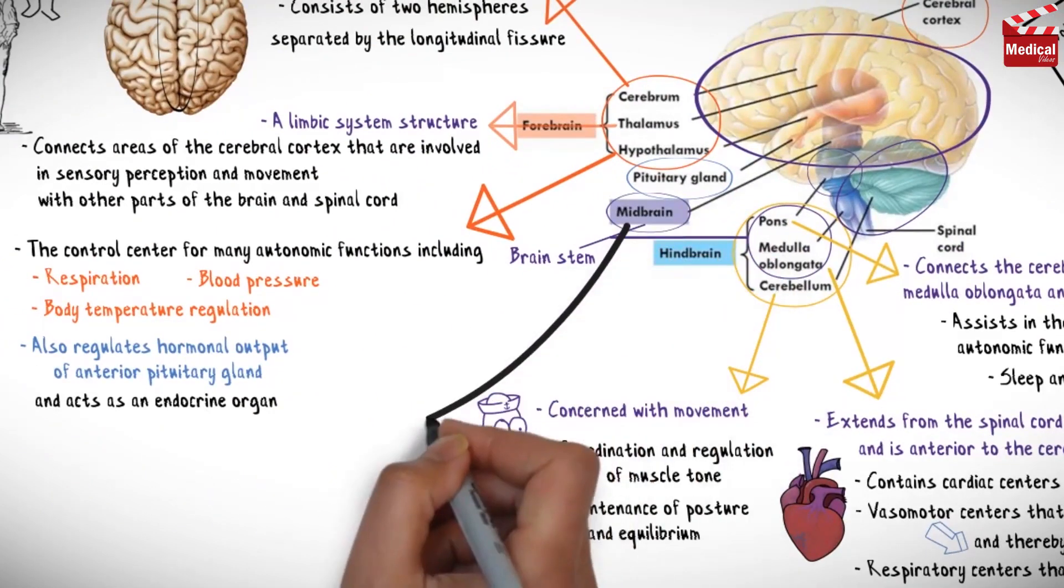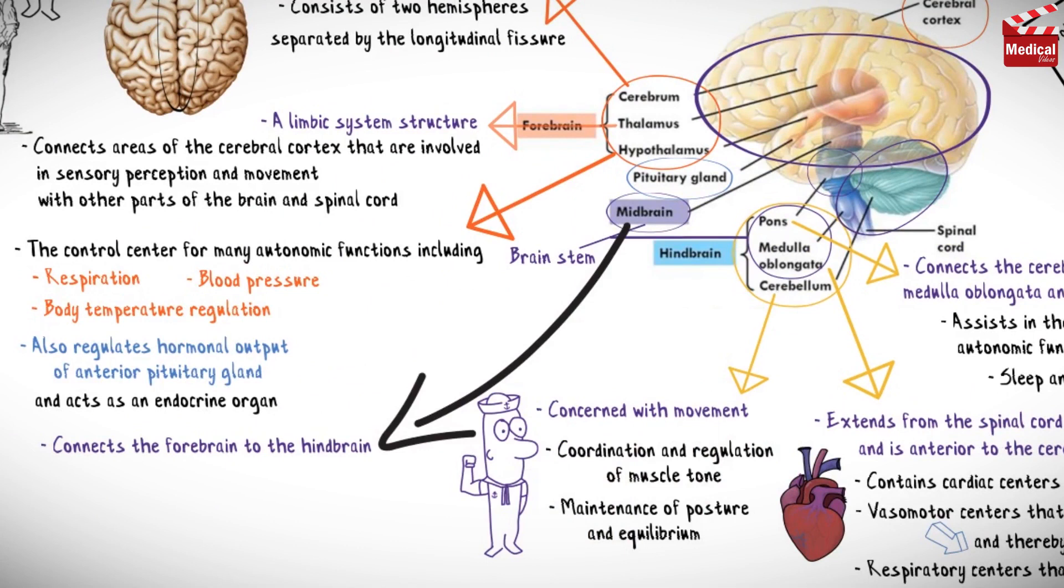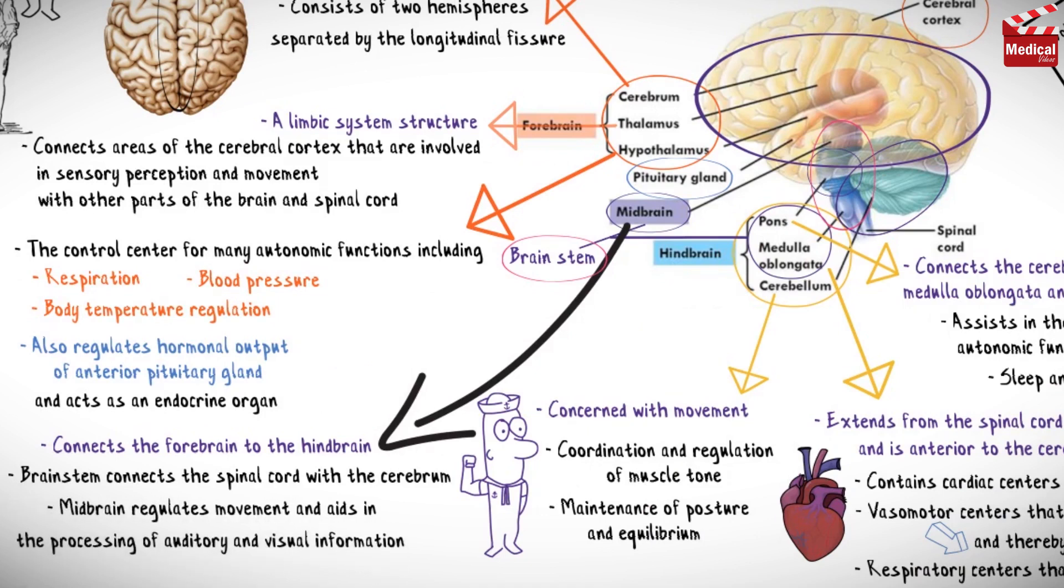The midbrain is the area of the brain that connects the forebrain to the hindbrain. The midbrain, medulla, and pons compose the brainstem. The brainstem connects the spinal cord with the cerebrum. The midbrain regulates movement and aids in the processing of auditory and visual information.